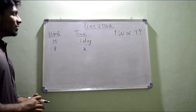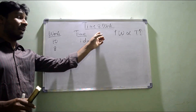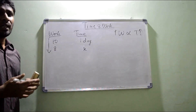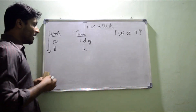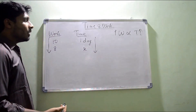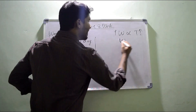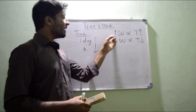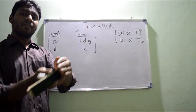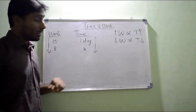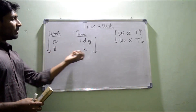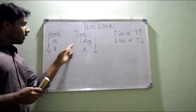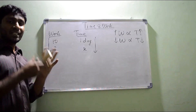When work decreases, the time taken also decreases. Whatever change happens in work affects time in the same proportion. Now, to find the unknown value x, I should do either cross multiplication or straight multiplication. When any two quantities are in direct proportion, I should always go for cross multiplication to get the answer — straight multiplication will not give the correct result.